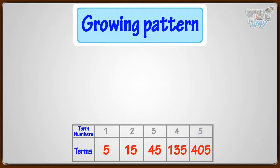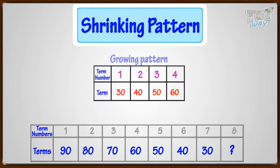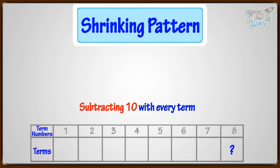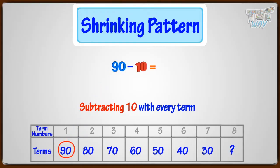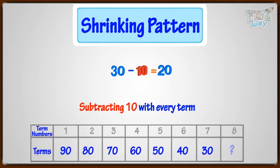Now let's learn another type of pattern — shrinking patterns. Here the numbers are decreasing with every term, exactly opposite to growing patterns where the numbers increase with each successive term. Let's find out what the next terms for this pattern are. Here we are subtracting 10 with every term: 90 minus 10 gives 80, 80 minus 10 gives 70, 70 minus 10 gives 60, and so on. So the next 8th term would be subtracting 10 from the 7th term: 30 minus 10, that is 20. So the 8th term would be 20.